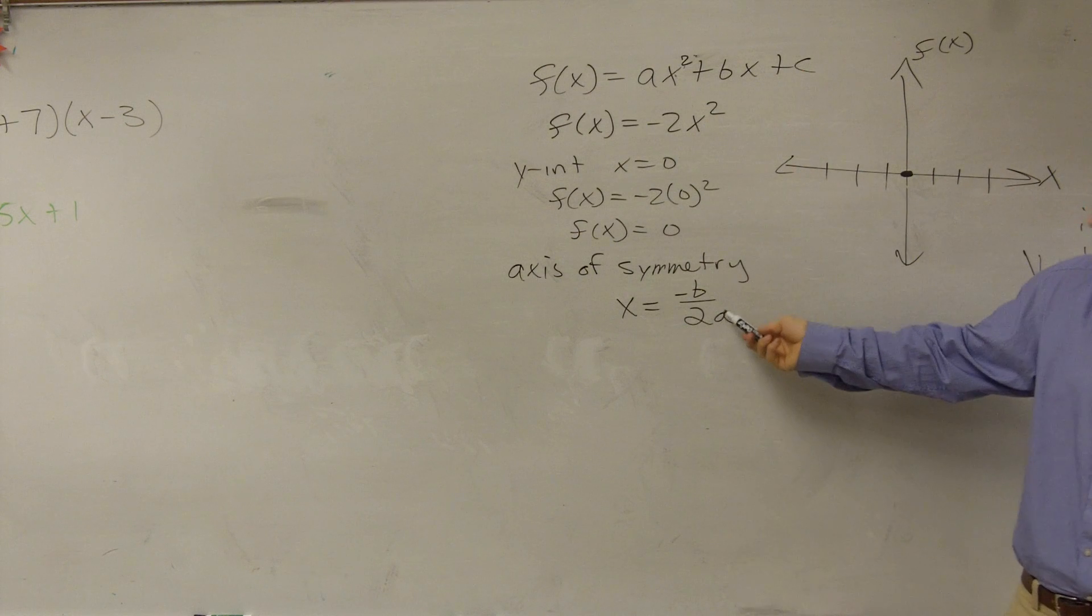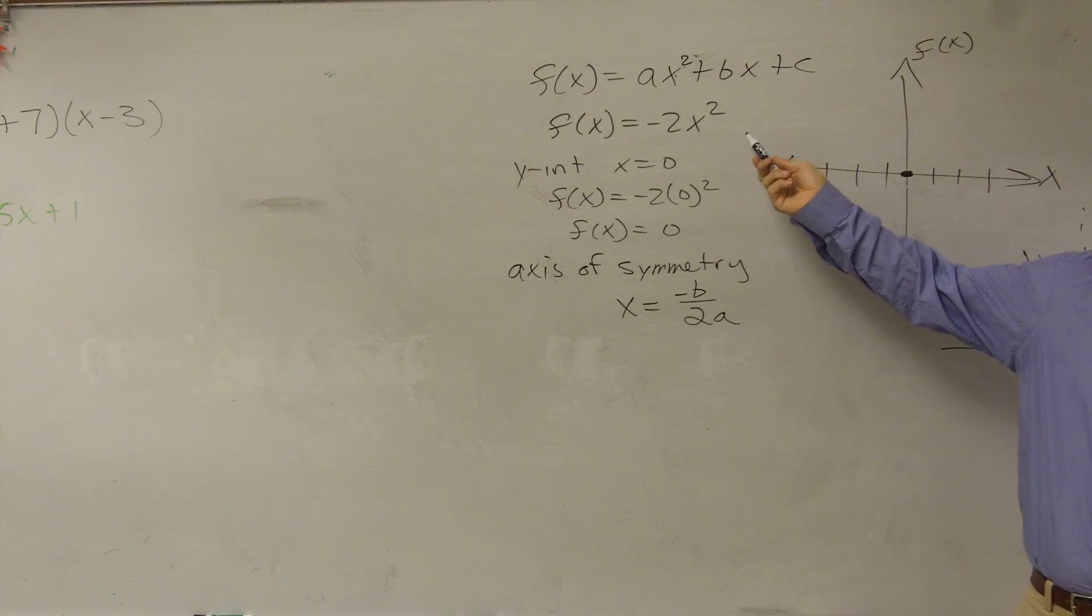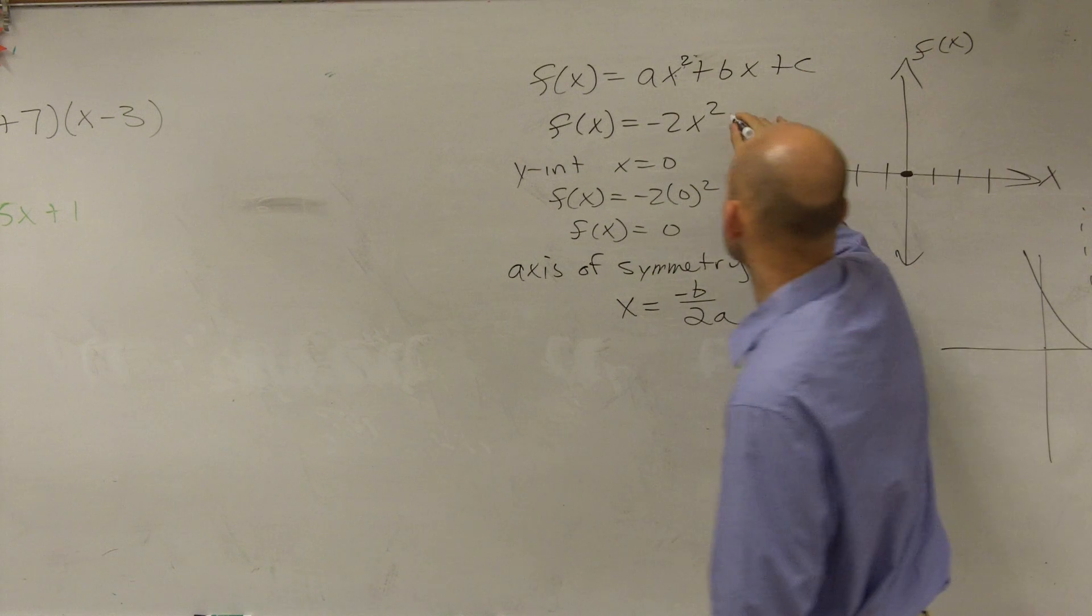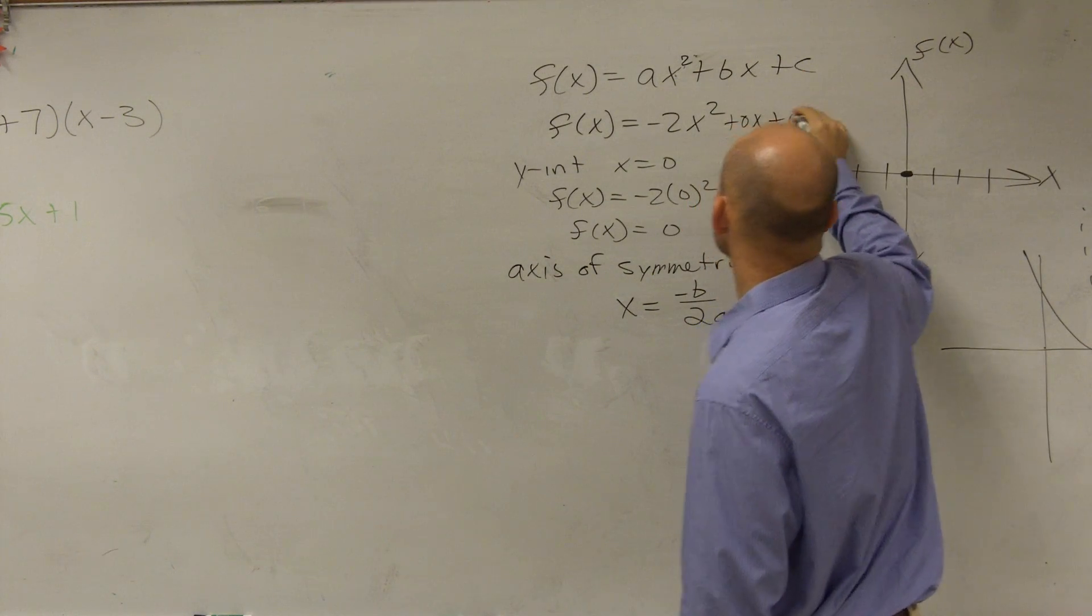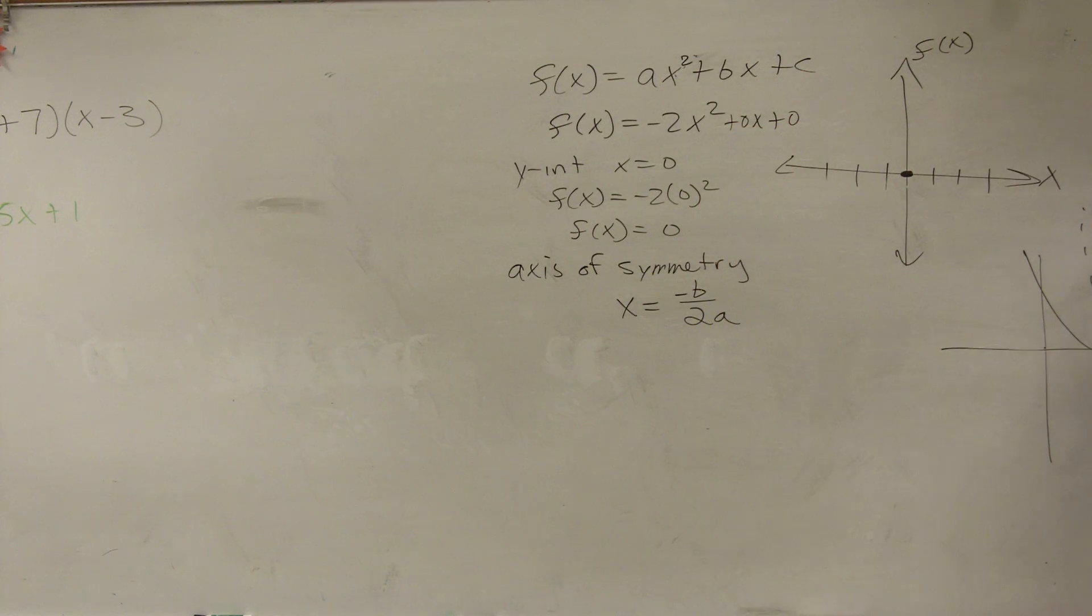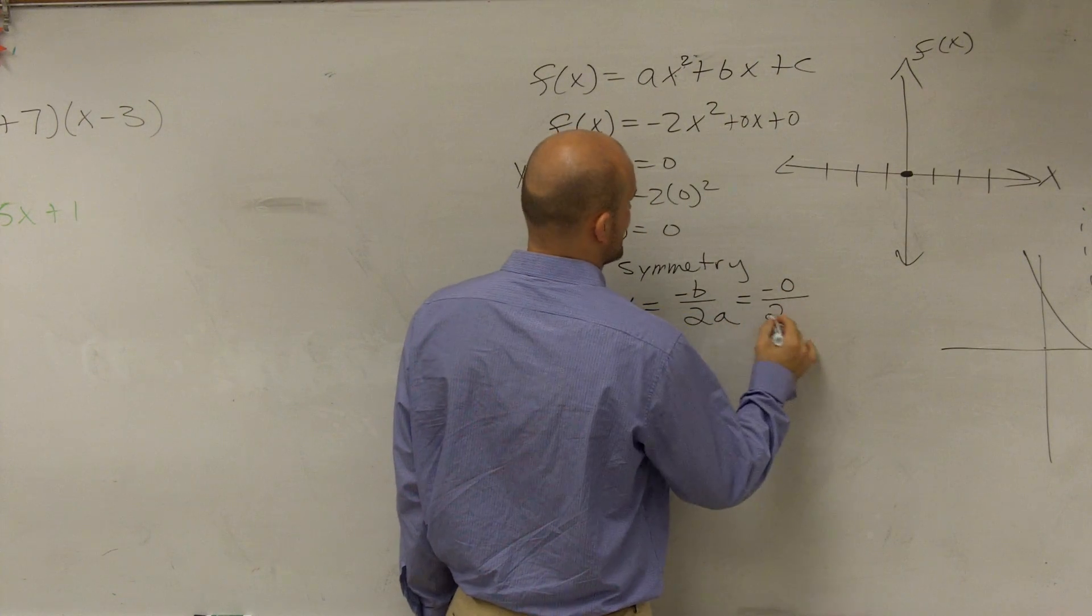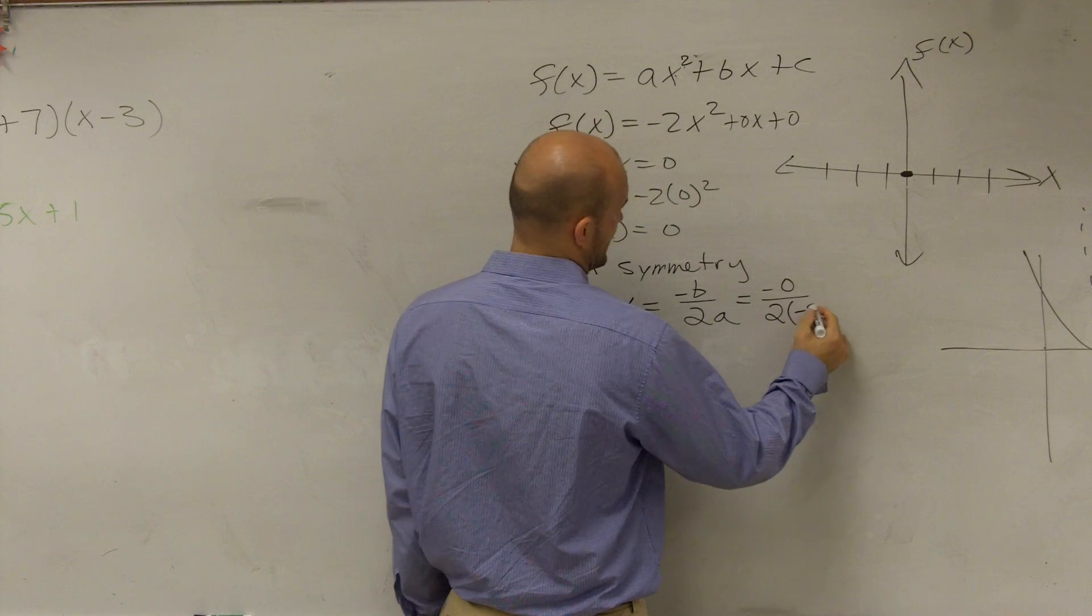So since they can be written in that format, we now know in this case my a is going to be -2. But do I have a b in here? Is there an x? Is there a linear term? No. So since there's not a linear term, you could say it looks like this, plus 0x plus 0.